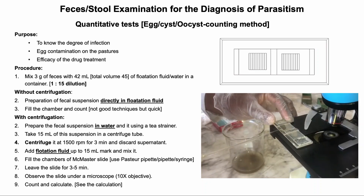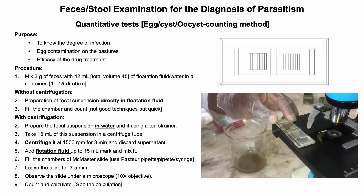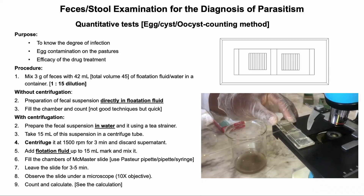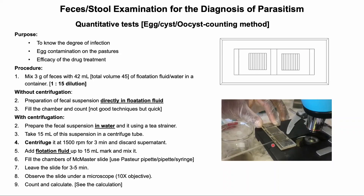Then immediately fill each chamber of the McMaster slide using a Pasteur pipette or syringe. Remember to fill the entire chamber, not just the area under the grid. If large air bubbles are present, remove the fluid and refill. Allow the slide to sit for five minutes so that eggs can float. Examine the slide at 10x objective and count the eggs or parasite stages in each lane of each chamber. Each type of egg, cyst, or oocyst should be counted separately.